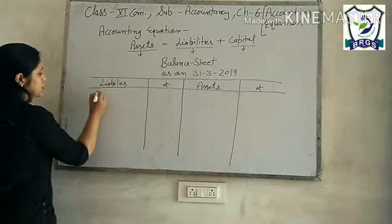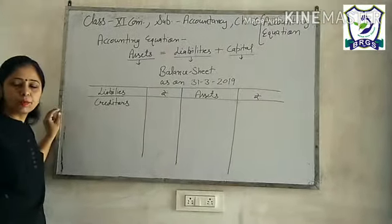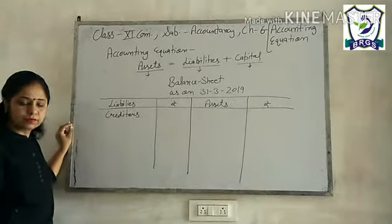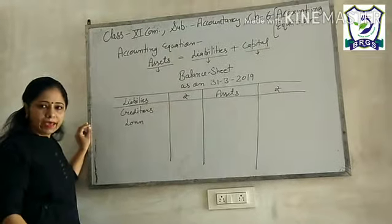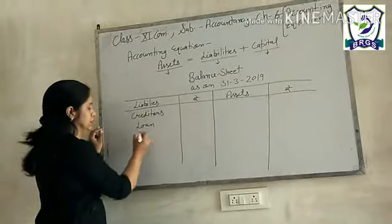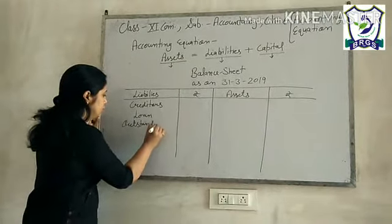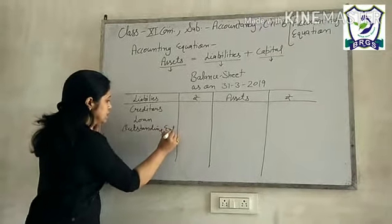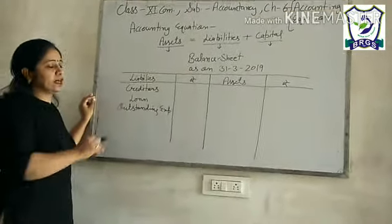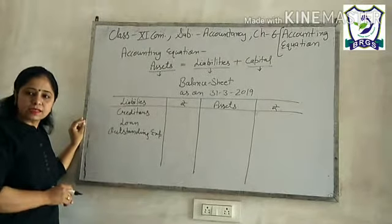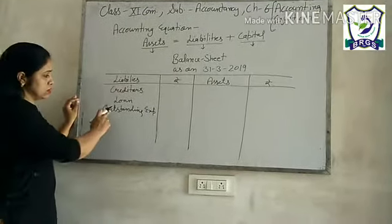For example, liabilities include creditors — a creditor is a liability. We have also taken loans from any financial institute or bank — that is also a liability. And besides that, outstanding expense is also a liability. Outstanding expense means expenses of the current year which the firm has not paid by the end of the current year. That payment has not been made, so this is also a liability.